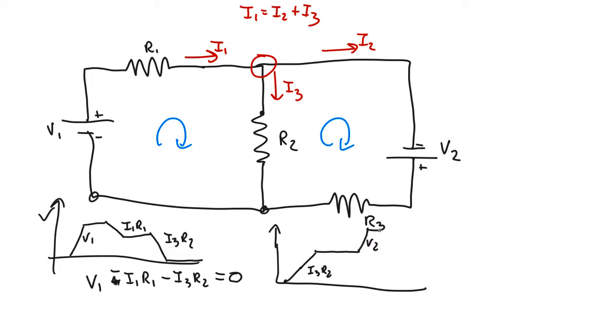Getting these signs right is the hardest thing and then it must go down because we're going from where the current comes in to where it goes out because the current, remember, it's going around here I2, so it must go down by I2 R3. So if you write down equations we get I3 R2 plus V2 minus I2 R3 equals zero.